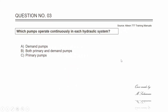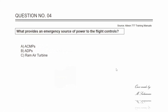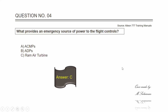Question number three: which pumps operate continuously in each hydraulic system? The answer is C — the primary pumps. Question number four: what provides an emergency source of power to the flight controls? The answer is C — the ram air turbine.